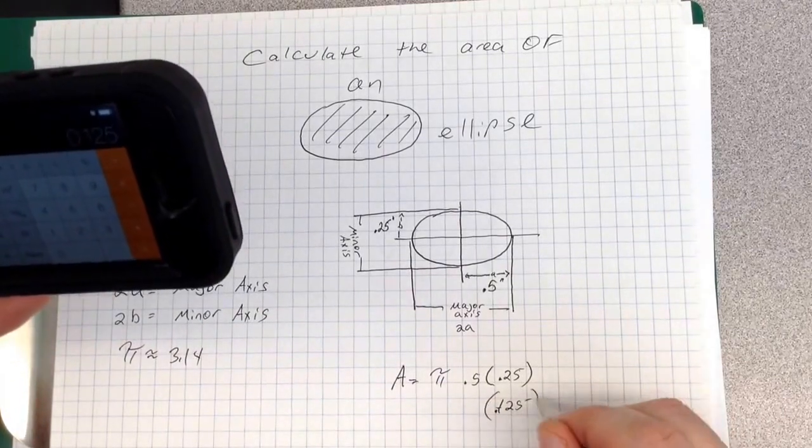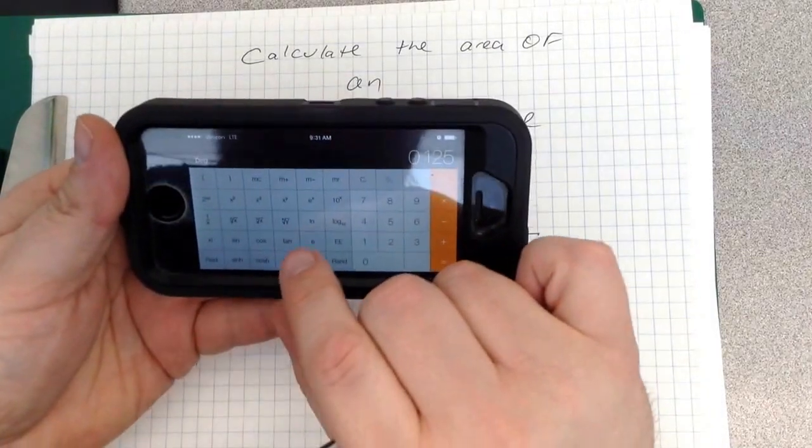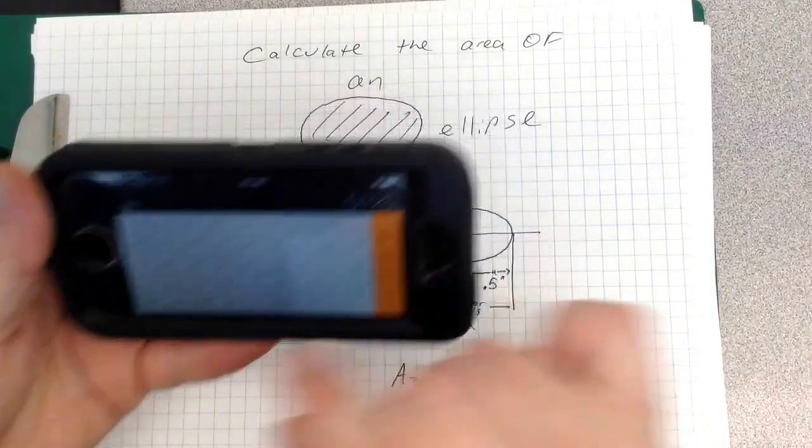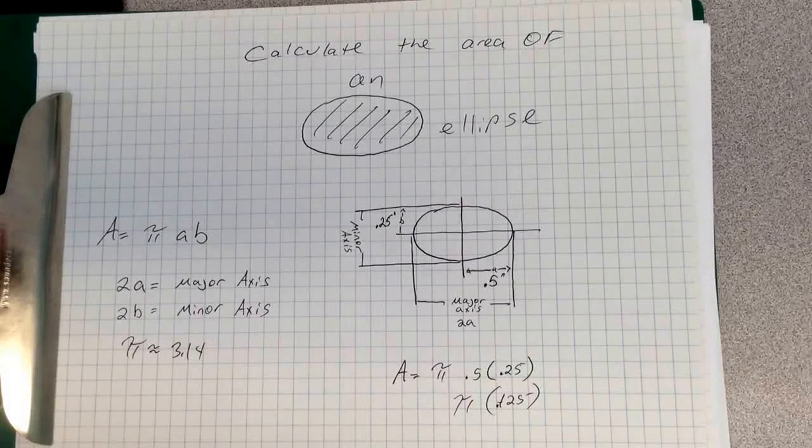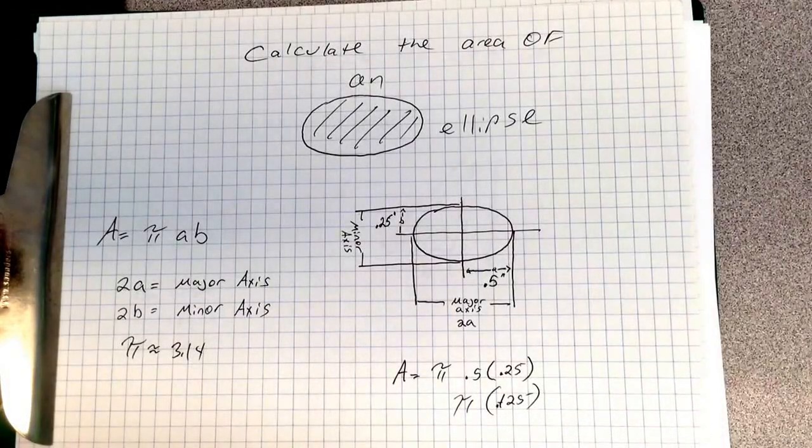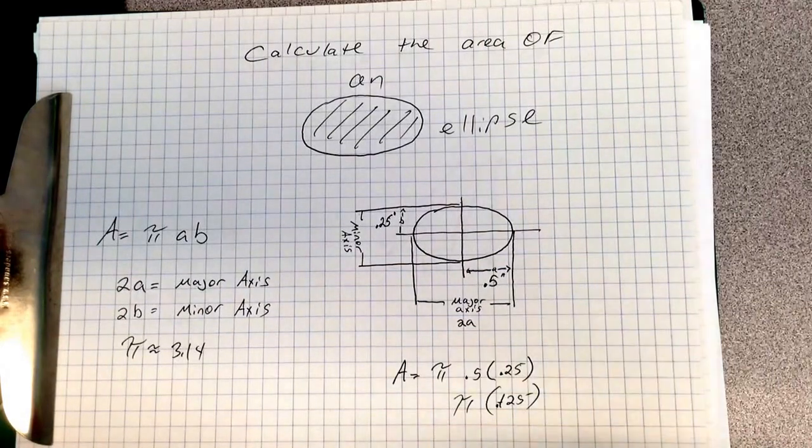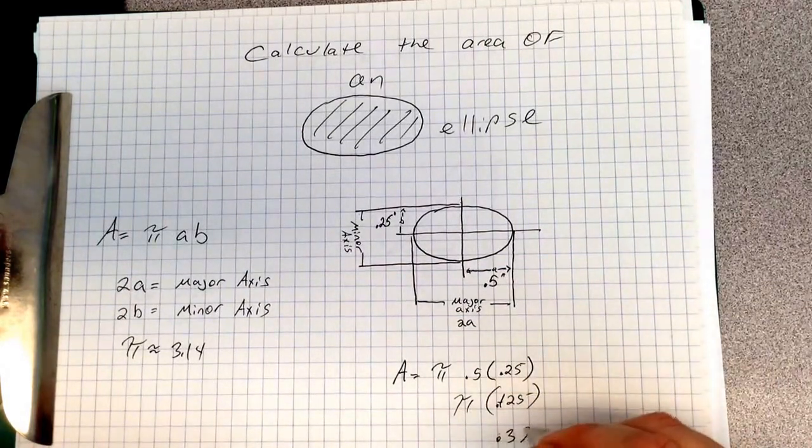Now we have to multiply that times pi. And generally on calculators, there's actually a pi key. If not, you can just type in 3.14. So for me, 0.125 times 3.14 is 0.39.